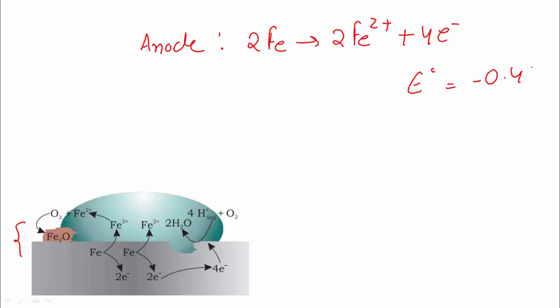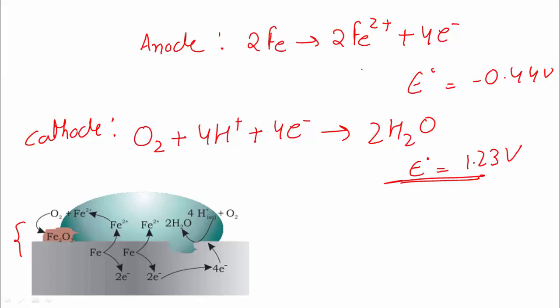At the cathode, oxygen in the presence of protons, which are generated by atmospheric pollution, takes four electrons to get converted into water, and the potential for this one is 1.23 volts.